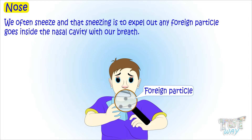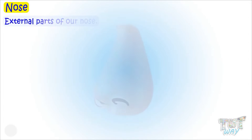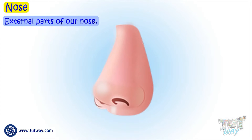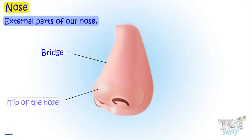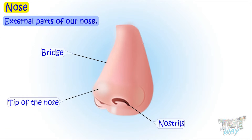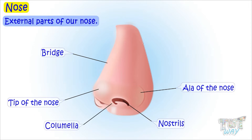Now let's learn the external parts of our nose. This is called a bridge, and this is the tip of the nose. These are nostrils, and this portion is called the ala of the nose, and this is called the columella.